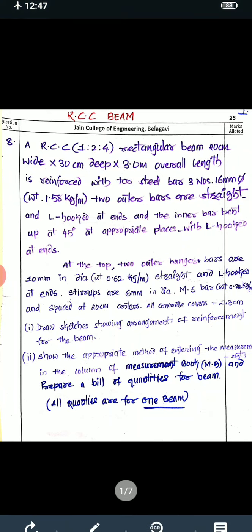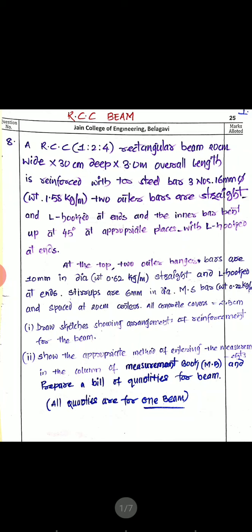So you will be having totally three bars at the bottom: two at the outer side which are straight and L-hooked at the ends, and the central bar which is bent up at 45 degrees at appropriate places and also has L-hooks. At the top, two outer hanger bars are 10 mm diameter with a weight of 0.62 kg per meter, straight and L-hooked at the ends. Stirrups are 6 mm diameter MS bars with a weight of 0.22 kg per meter, spaced at 20 centimeter center to center. All concrete covers are 2.5 centimeter.